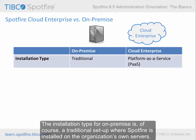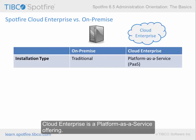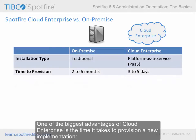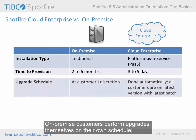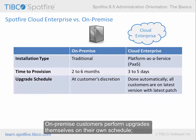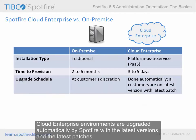The installation type for on-premise is a traditional setup where Spotfire is installed on the organization's own servers. Cloud Enterprise is a platform-as-a-service offering. One of the biggest advantages of Cloud Enterprise is the time it takes to provision a new implementation: three to five days versus two to six months for on-premise. On-premise customers perform upgrades themselves on their own schedule. Cloud Enterprise environments are upgraded automatically by Spotfire with the latest versions and the latest patches.